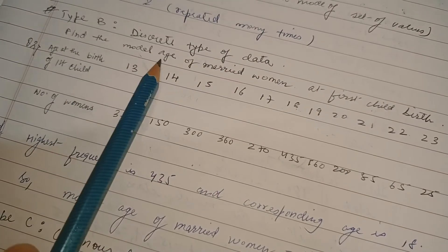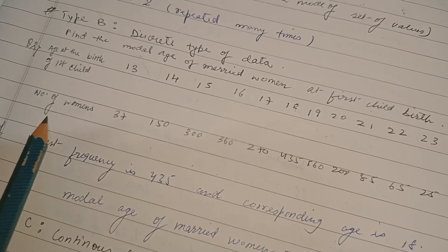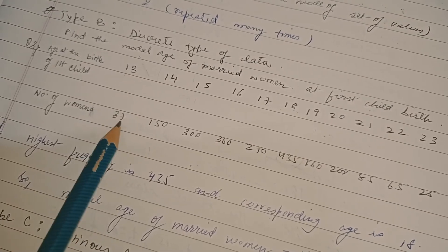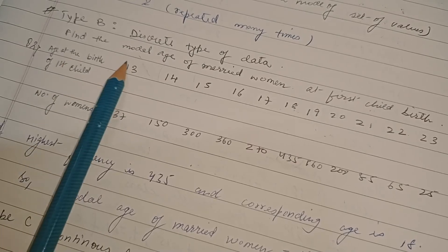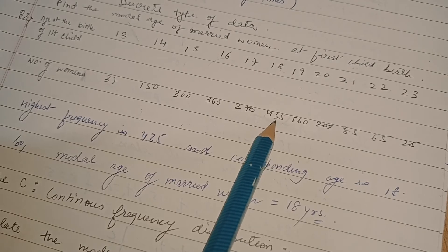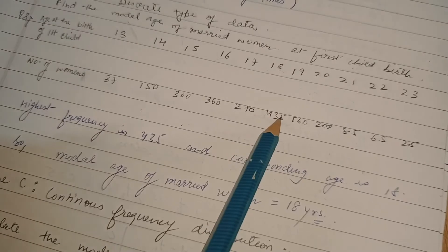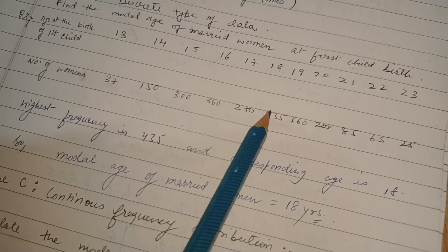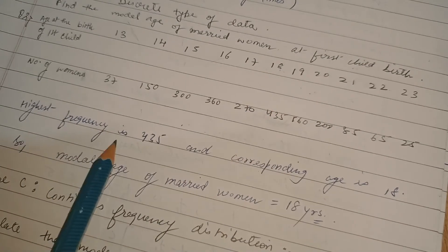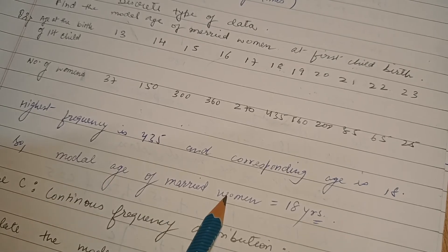Now, discrete type of data. Find the model age of married women at first child birth. Age at the birth of first child is given and the number of women are given, so frequency is given and the class is given. 435 is the maximum frequency occurring maximum times, the highest value in the frequency line. Which age corresponds to this 435? That is 18. So model age of a married woman at the first child birth is 18 years.